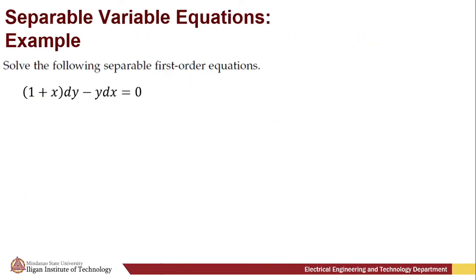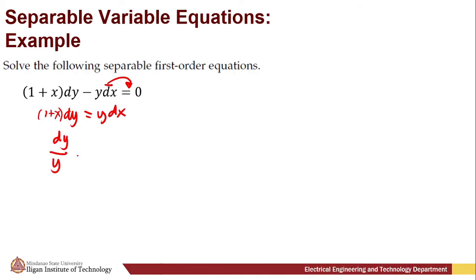Here is another example of a separable variable equation. We are going to find the solution of the differential equation (1 + x) dy − y dx = 0. First, we manipulate this differential equation so that it is easy to separate the variables. We have (1 + x) dy, and we transpose the y dx term to the other side of the equation.